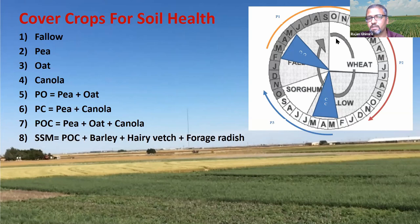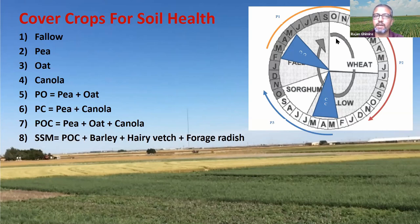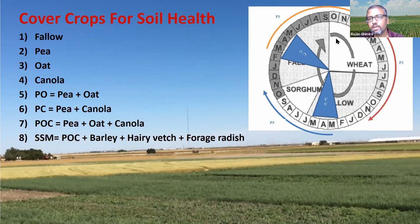These cover crop treatments are integrated into a winter wheat, sorghum, fallow rotation — a three-year crop rotation. Because of precipitation and water limitation, we cannot grow a crop every year. Winter wheat starts in October of the first year, is harvested in the second year, and then there is about an 11-month fallow with no crop, no cover crop, and bare ground. Then in the third year in June, we plant sorghum that grows for four to five months.